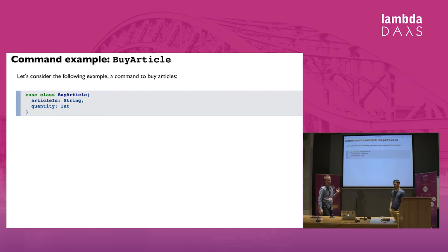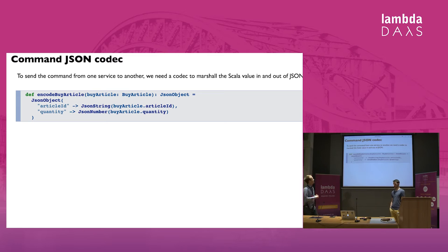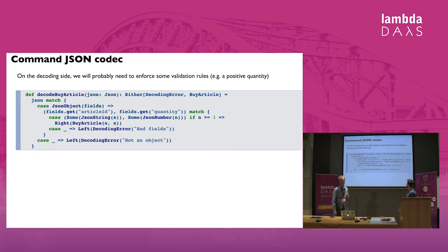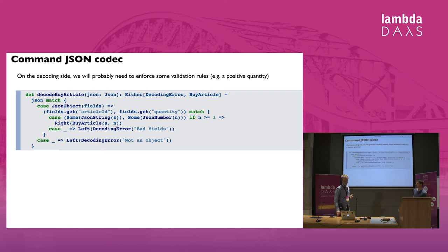If we consider a simple command like a BuyArticle command, we might need to encode it in JSON. In Scala, we could have a syntax to encode it in a JSON AST. We can also have a decode method, but it gets quite complicated — if you want to decode one field, you have to decode both of them, and if something's wrong, we might want to accumulate errors.